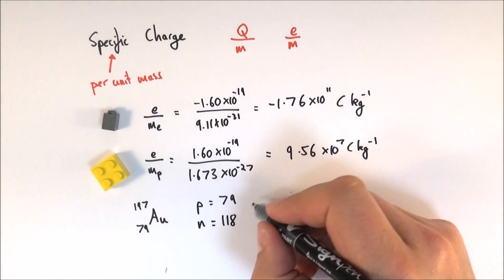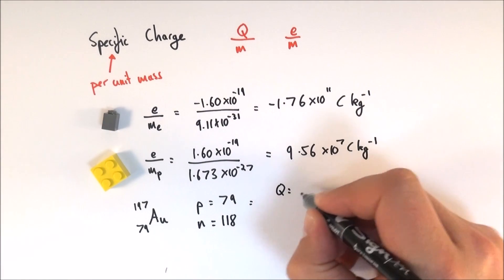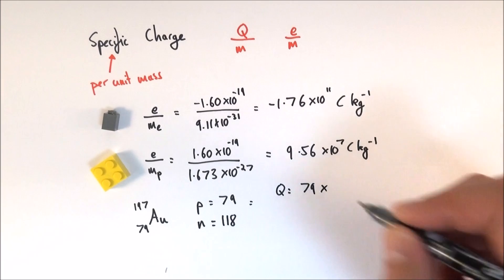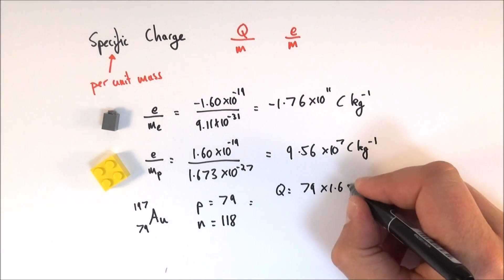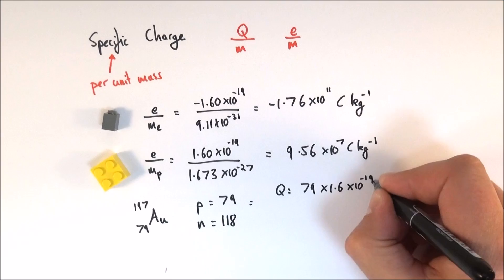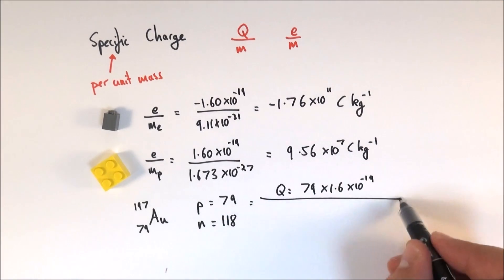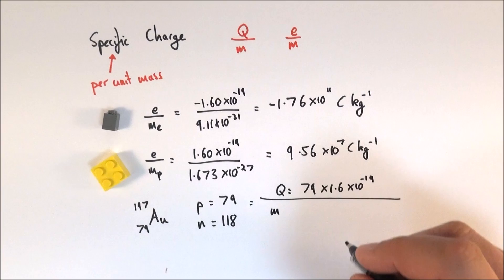To work out the charge to mass ratio, the charge is going to be equal to 79 times the number of protons, which is one point—it's basically all of this. And then you want to look at the total mass.